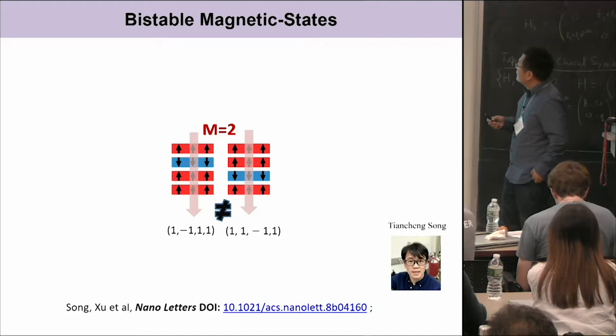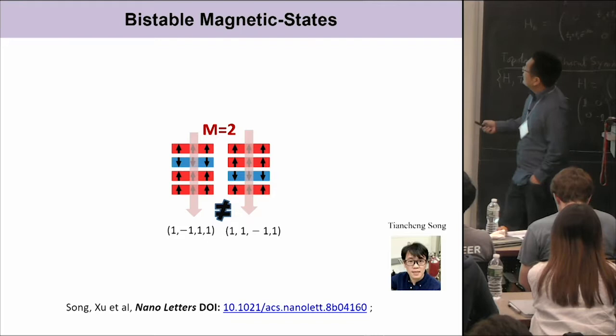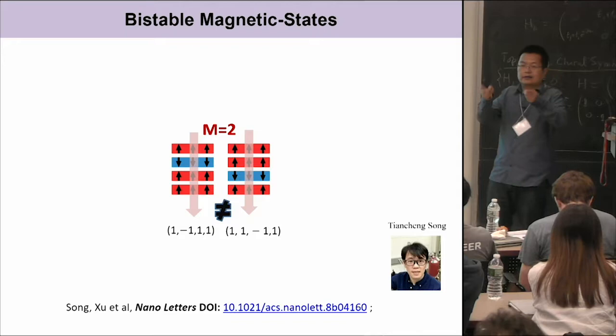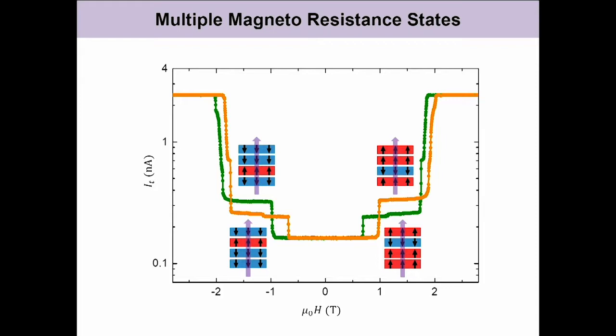Even though these two states are degenerate in terms of magnetization, if I apply a current or electric fields in a certain direction, the degeneracy actually breaks, because the direction is now determined by the electric fields or current. These two states are not the same anymore. This is another example with this four-layer tunneling junction — now I apply the magnetic field and measure the tunneling current.